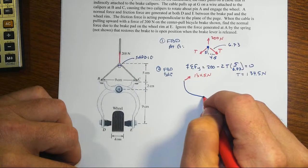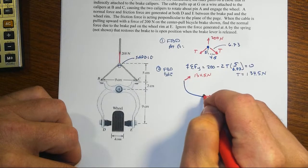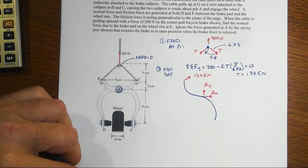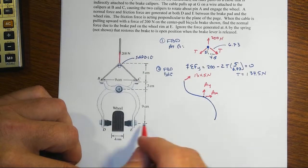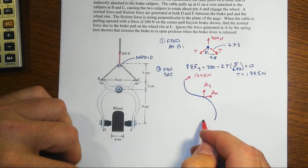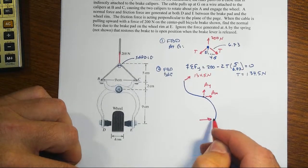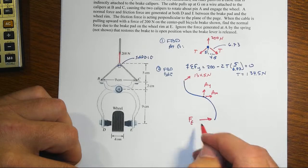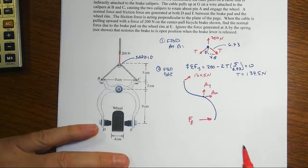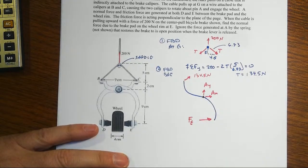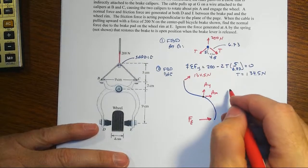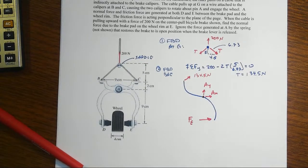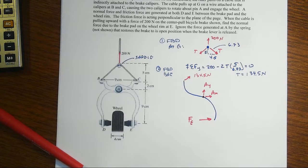At A, we have a pin, an AX, an AY, don't know, don't care if those are in the right direction. And down here at E, we've squeezed this, and so the rim is pushing back with this normal force. That's what we care about. And so all we have to do is some moments about point A, not E, but rather about point A.